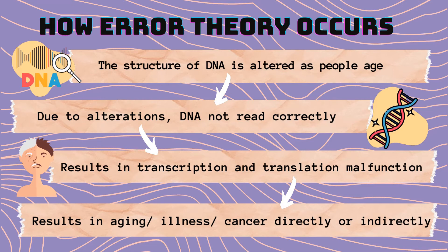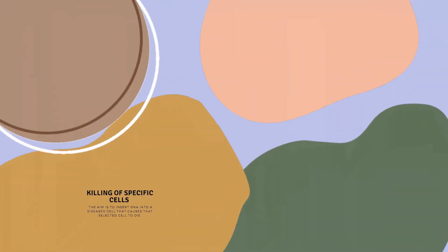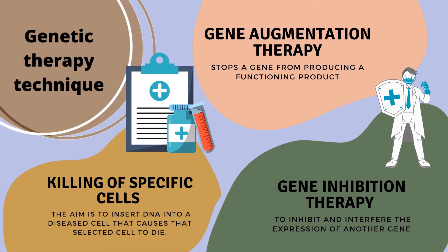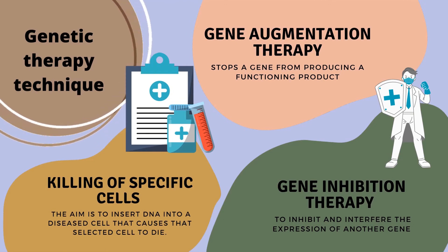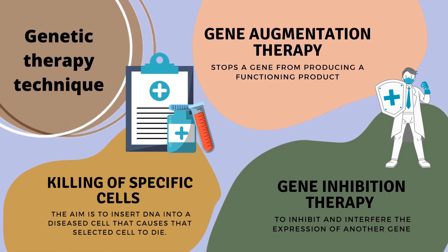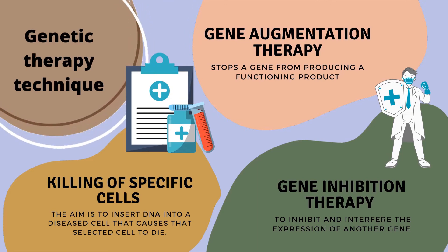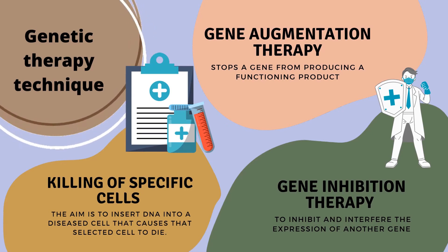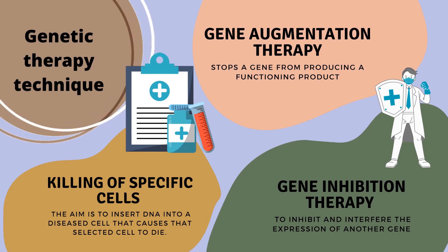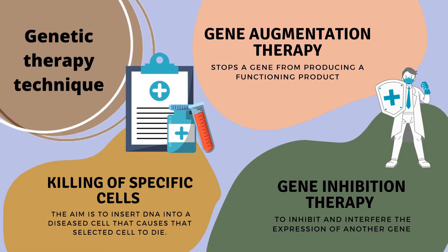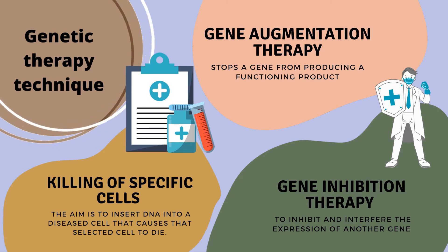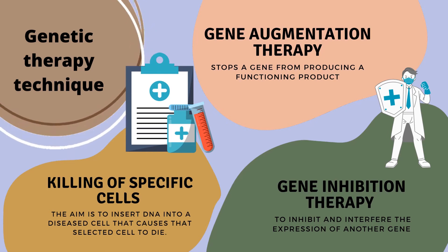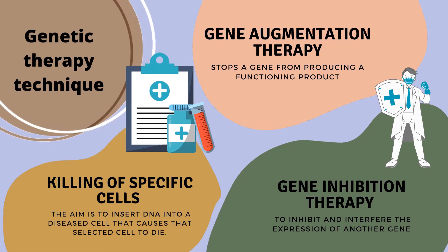There are ways to treat or fix DNA alterations using gene therapy techniques. The first is gene augmentation therapy, which aims to stop a gene from producing a functioning product. The second is gene inhibition therapy, which inhibits and interferes with the expression of another gene. The third is the killing of specific cells, which is aimed to insert DNA into a diseased cell that causes the selected cell to die.